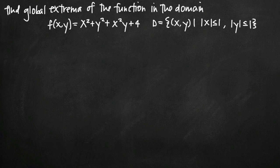Today we're going to be talking about how to find global extrema of a multivariable function given that that function has been defined for some domain D. In this particular problem, we've been given the function f equal to x squared plus y squared plus x squared y plus 4, and we've been told that the domain on which we're supposed to test for global extrema is absolute value of x less than or equal to 1 and absolute value of y less than or equal to 1.